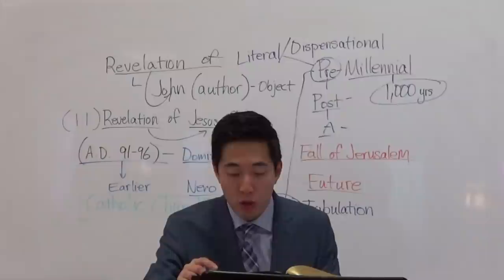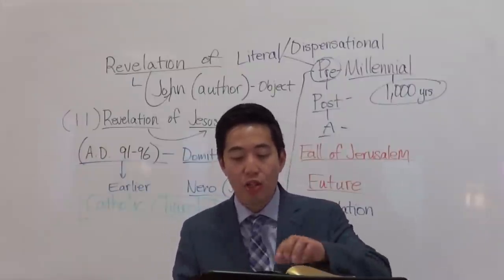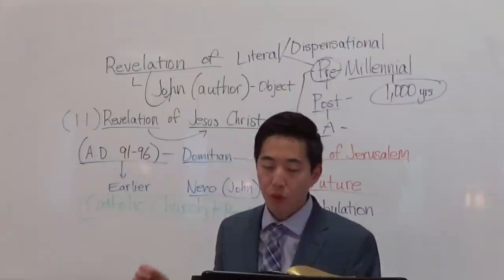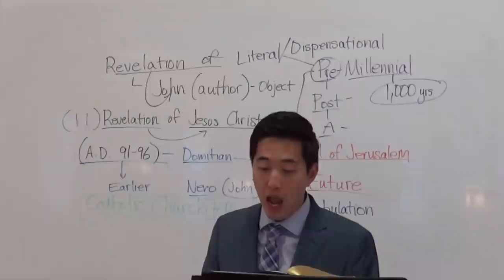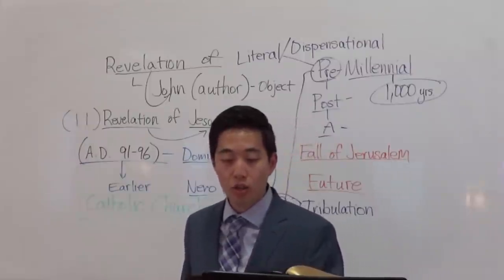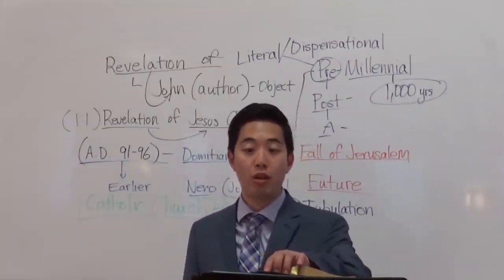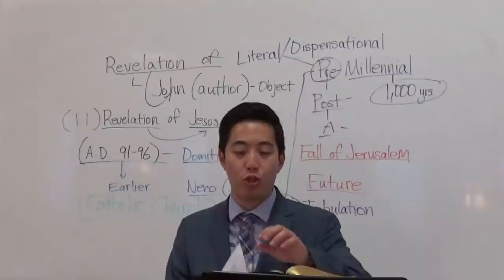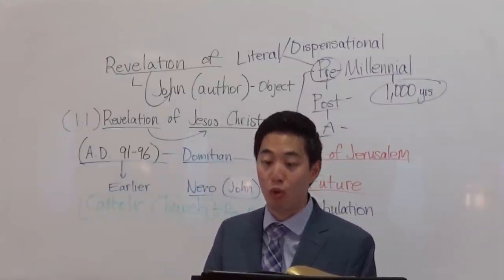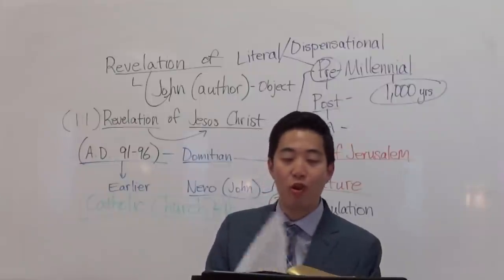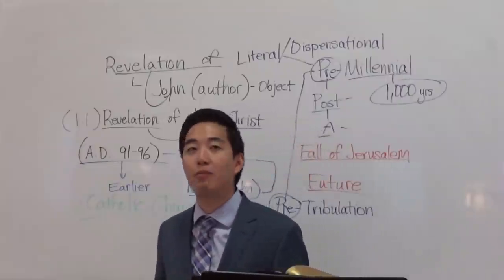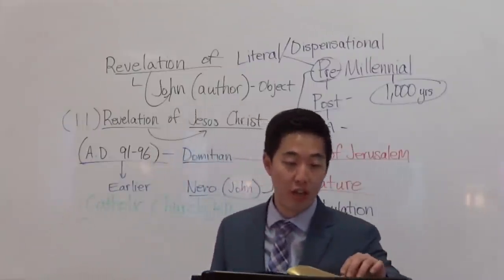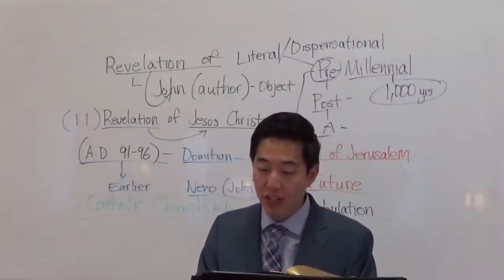Revelation has 22 chapters, 404 verses, and 11,995 words. Scholars call this book the Apocalypse. If you go to scholastic studies on the book of Revelation, they will refer to it as apocalyptic or apocalypse. But it is more accurately called Revelation because Apocalypse is a transliterated word from Greek, while Revelation is a translated word.